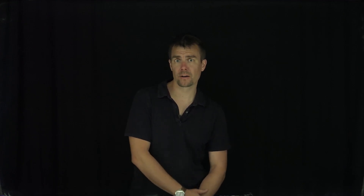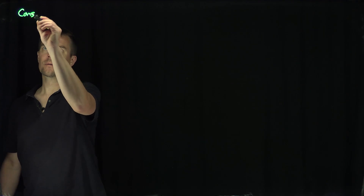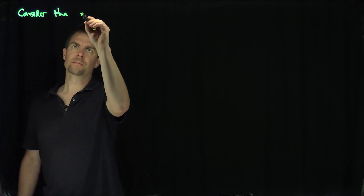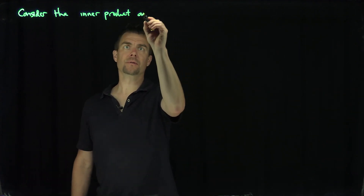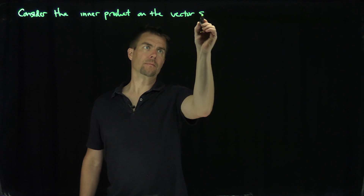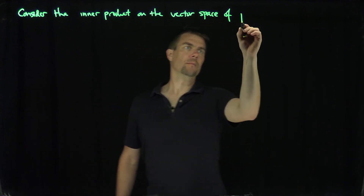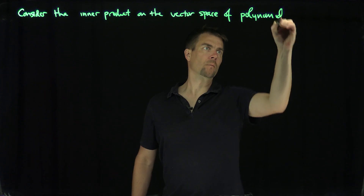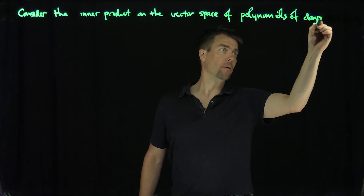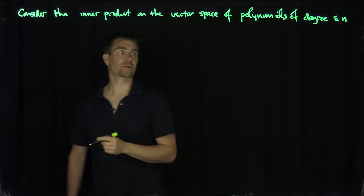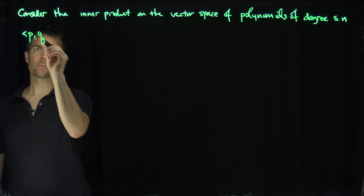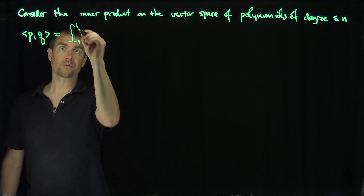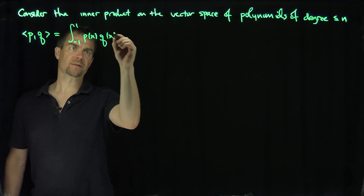Hello, students. In this video, we'll see an example of using Gram-Schmidt to find orthogonal polynomials. Let's consider the inner product on the space of polynomials. Here's the inner product: given two polynomials p and q, the inner product will be the integral from negative 1 to 1 of p(x) times q(x) dx.